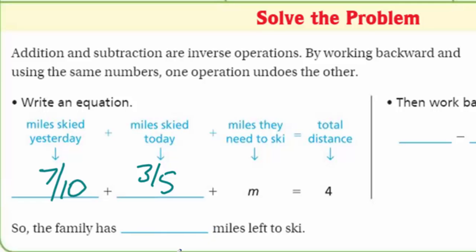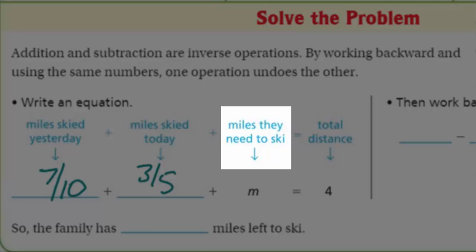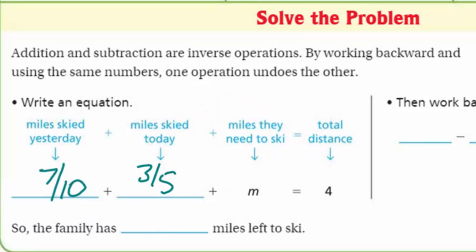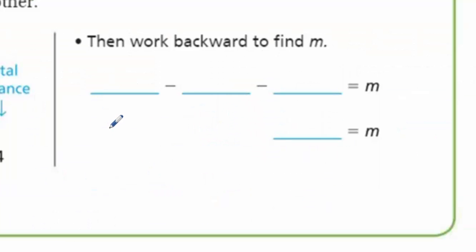It says miles skied yesterday. Looks like seven tenths to me. Come on down. So seven tenths. This is plus miles skied today. They skied three fifths mile pine trail. So we have three fifths. Plus M. Oh, that's the miles I need to ski. Is equal to the total distance, which is four. Cameraman. Thank you. Then work backward to find M.